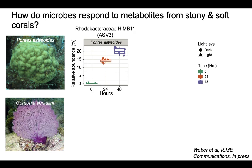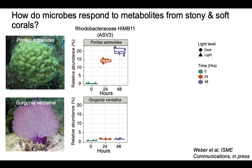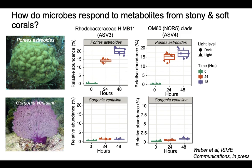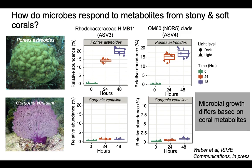With Porites astroides, we saw that Rhodobacter ACAHIMB11, a roseobacter, went from representing zero to about 20% of the microbial community. With Gorgonia ventolina, it hardly grew at all. We saw a similar trend with OM60, or the NOR5 clade of bacteria — these taxa were growing like gangbusters when exposed to Porites astroides and doing nothing when exposed to Gorgonia ventolina. Both of these bacteria are generalists that can respond to many different kinds of carbon compounds, which is probably why they're so successful on the very diverse metabolite pool released by Porites astroides. So microbial growth really does differ depending on who's producing the exudates.